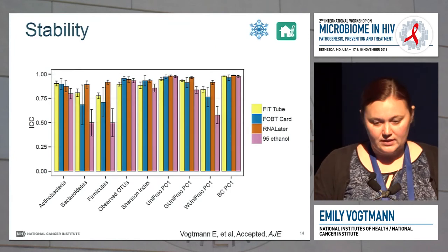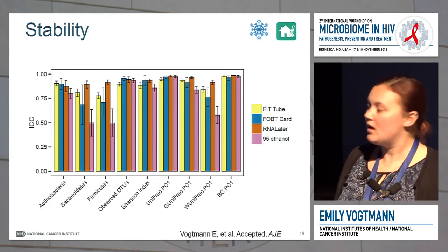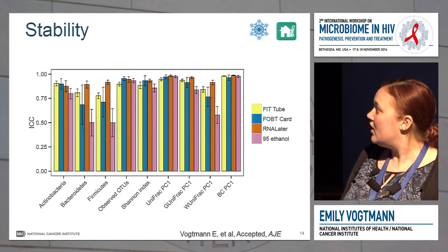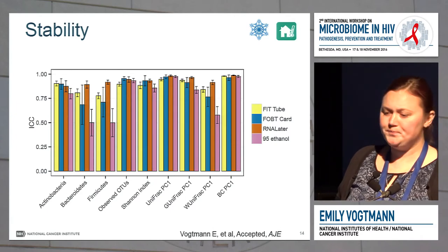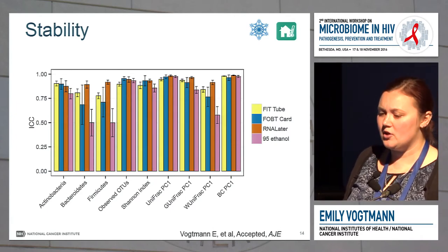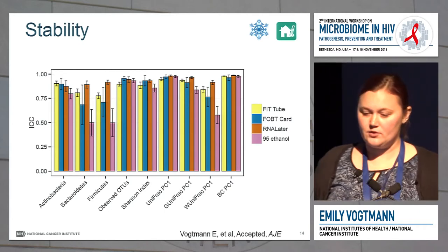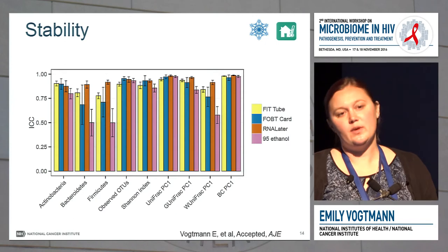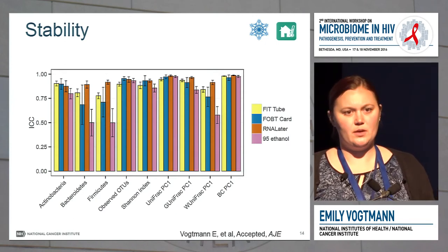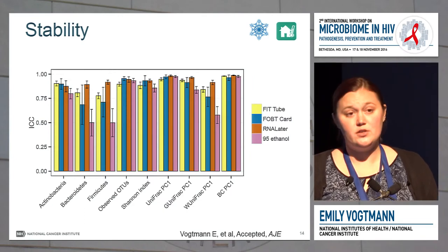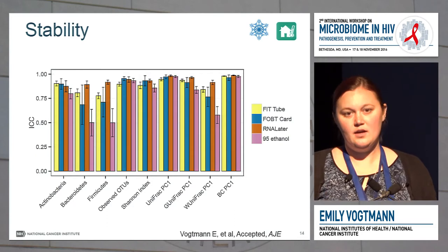When we look at stability, some of these ICCs do decrease a bit — they're not as close to one as we would like, particularly for the 95% ethanol. You'll notice that the 95% ethanol is really only lower for measures that take into account relative abundance: weighted UniFrac and the relative abundance of the three phyla. So it's possible that it's just slightly disrupting some of the OTUs and causing a change in these relative abundance measures since they're dependent on the relative levels.